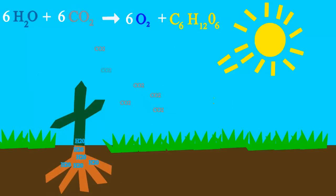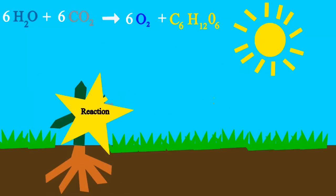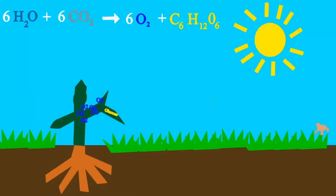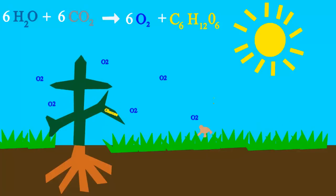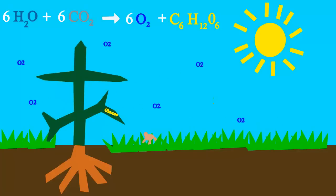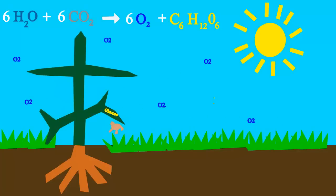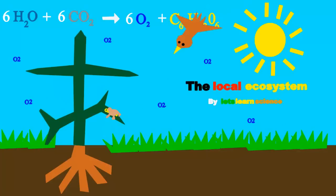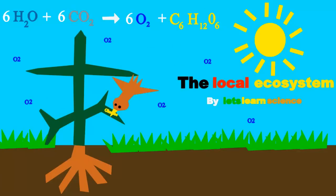Plants take water, sun and CO2 to make glucose, the sugar that they use for food. They also put oxygen into the air so we can share because oxygen is everywhere.